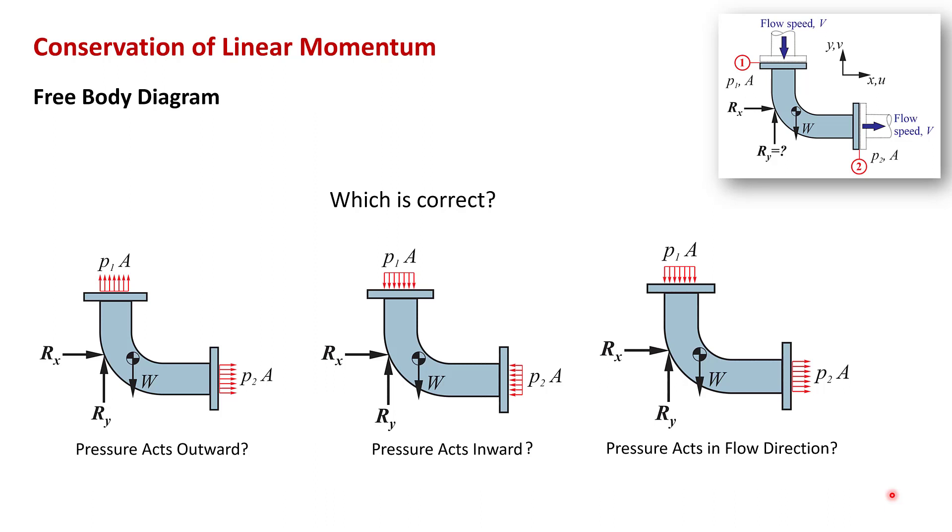The first step in this problem is to sketch a free body diagram. And so this is a quiz within a quiz. I've shown here three possible free body diagrams, which is correct. The only difference in these three free body diagrams is the direction of the pressure forces. So you should ask yourself, do the pressure forces act outward on the flange? Do the pressure forces act inward? Or do the pressure forces act in the direction of flow?